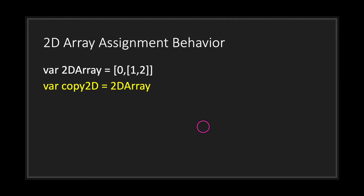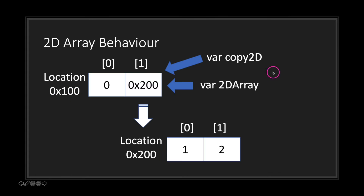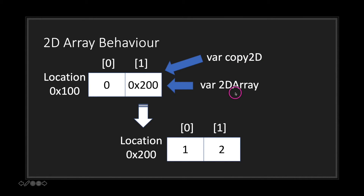If we take this 2D array and assign it to a new variable — in this case copy 2d — what we're doing is taking the reference to the memory address location and assigning that location to copy 2d. So they both point to not only the first section of the array but also the sub array. If we change a value — say turning 1 into 100 — a print statement for either copy 2d or 2d array will show 0, the new value, and then 2, because we're referencing the same address memory location for both variables.